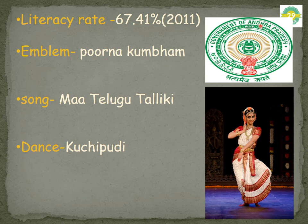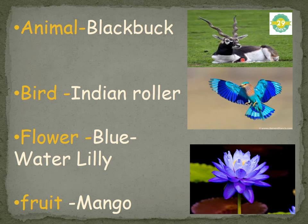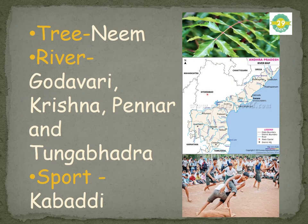The emblem of Andhra Pradesh is the Purna Kumbham. The state song is 'Maa Telugu Talliki.' The state dance is Kuchipudi. The state animal is the Blackbuck; the state bird is the Indian Roller, a beautiful bird. The state flower is the Blue Water Lily; the state fruit is Mango; and the state tree is the Neem tree. The four major rivers are Godavari, Krishna, Pennar, and Tungabhadra. The state sport is Kabaddi.